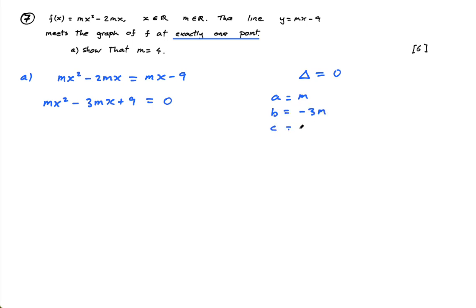The discriminant, b squared minus 4ac is equal to b squared minus 3m squared, don't forget your bracket, minus 4a is m, and c is 9. Don't forget to square the 3 and the negative, so that becomes 9m squared minus 4 times 9 is 36, 36m. As we said, equals 0. So 9m squared minus 36m equals 0.